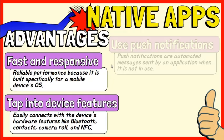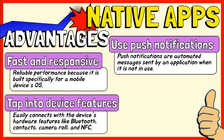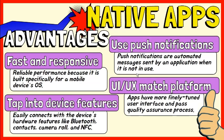Native apps use push notifications to alert users. Push notifications are automated messages sent by an application to a user when the application is not open. Native apps have a more finely-tuned user interface, and they usually need to pass a much stricter development and quality assurance process before they are released.